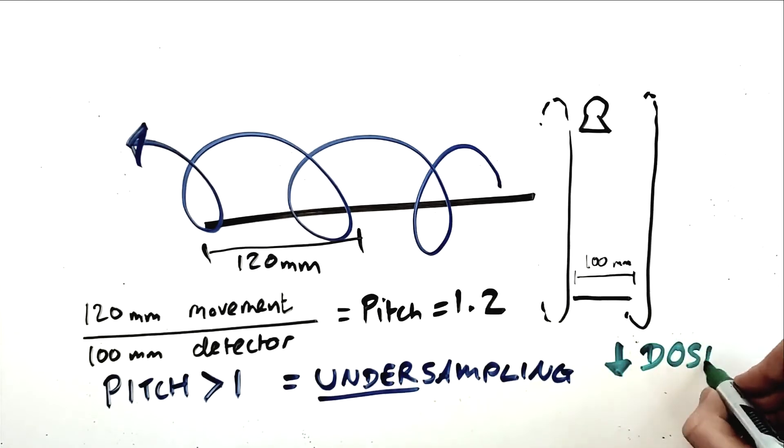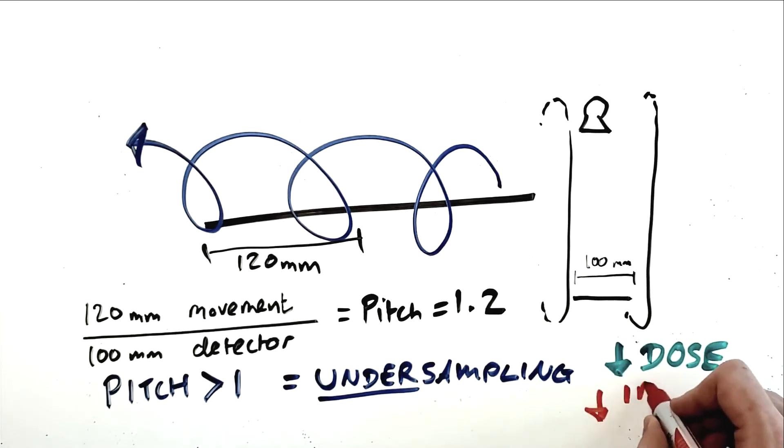When we have a higher pitch, we are just decreasing the signal-to-noise ratio. High pitch is used in studies where rapid acquisition is a high priority, like in CT angiography studies, or where lower radiation dose is a high priority, like low-dose lung cancer screening.